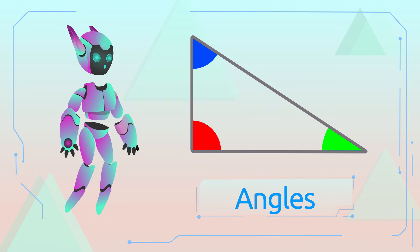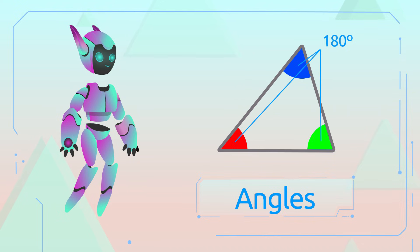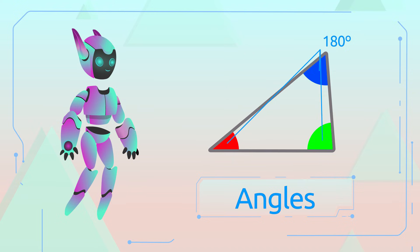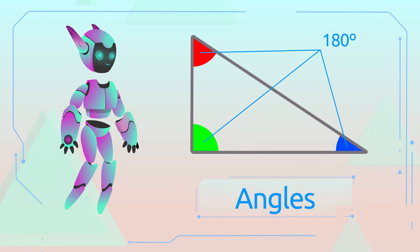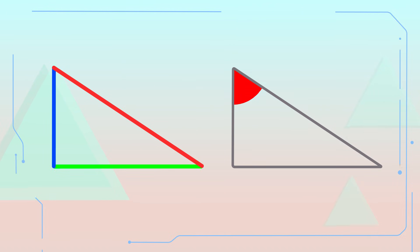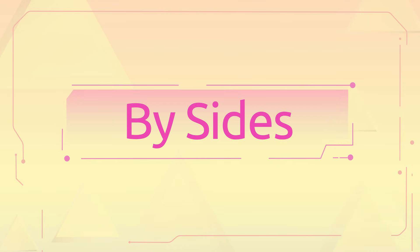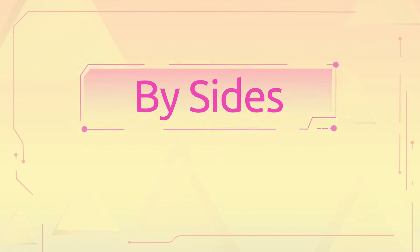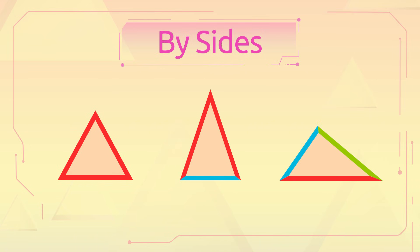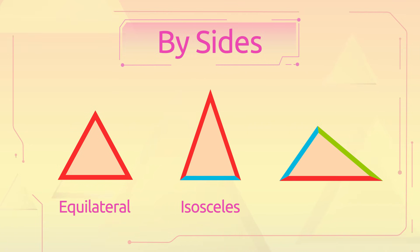Did you know that if we added all angles together, the result would always be 180 degrees? We classify triangles depending on their sides or angles. If we classify triangles depending on their sides, we would get three types: equilateral, isosceles, and scalene triangles.